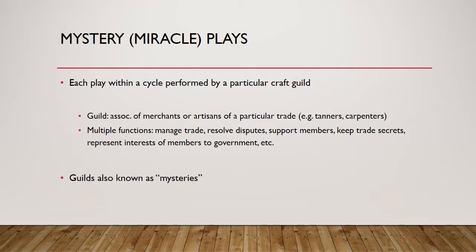Each mystery play within a cycle would have been performed by an individual craft guild, or sometimes a couple of craft guilds working together. A guild, if you're not familiar with the term, is an association of merchants, artisans, or tradespeople that all work in a common trade — tanners, carpenters, dressmakers, barbers, things like that. Guilds were early versions of what we have today like unions, professional associations, even monopolies. They managed trade within a city, resolved disputes between members, supported members who fell on economic difficulties, provided social welfare as well as economic governance, kept trade secrets, and represented the interests of their members to government.